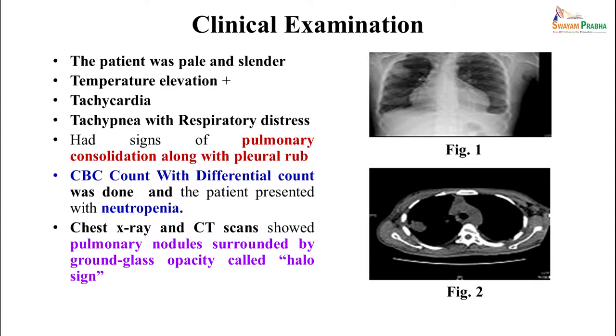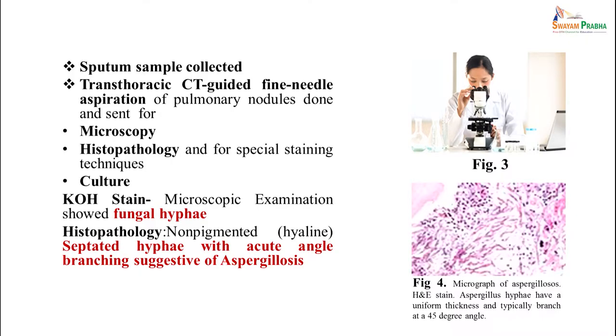Chest X-ray and CT scans showed pulmonary nodules along with ground glass opacity, also called halo sign. Sputum samples were collected and CT-guided fine needle aspiration was done from the pulmonary nodules to get a sample from the site of infection. These were sent for microscopy and culture. On microscopic KOH examination, septate fungal hyphae were clearly visible.